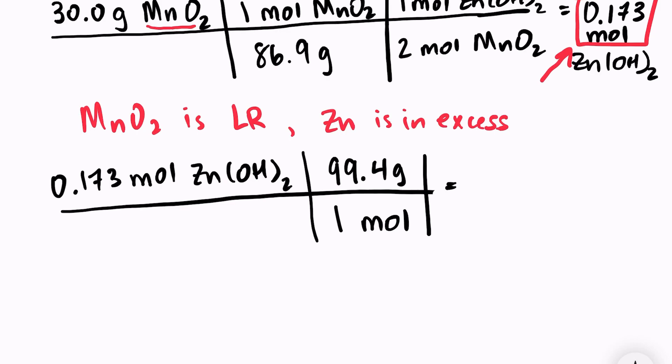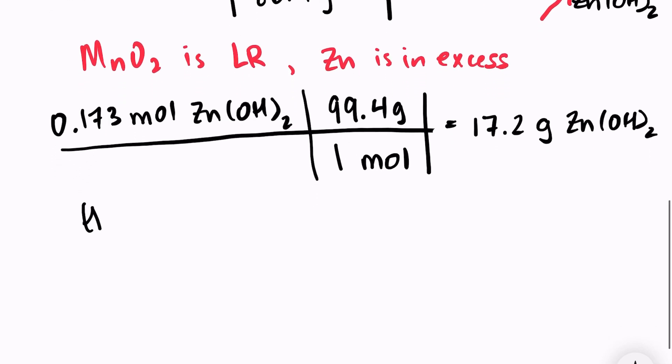So 0.173 times 99.4 which equals 17.2 grams of zinc hydroxide. And remember this is our theoretical yield. It's the maximum amount of product that could be formed and that number is based off of the limiting reactant.